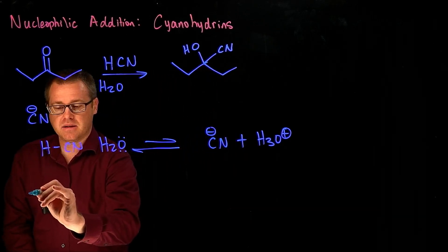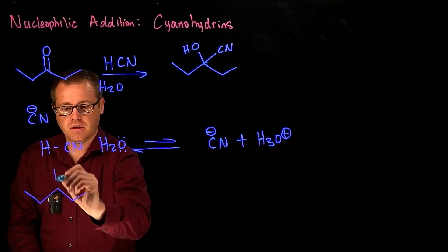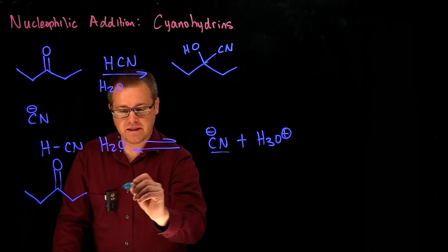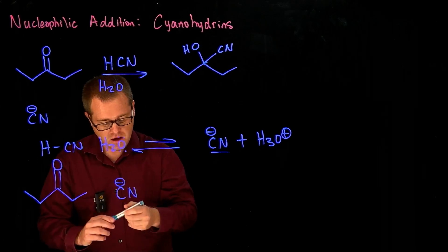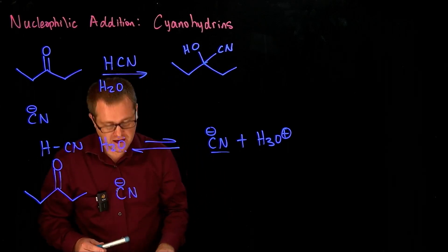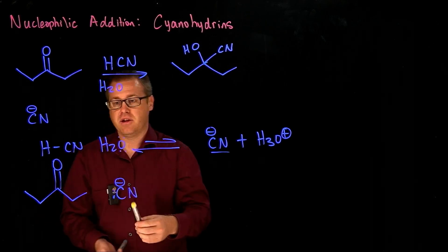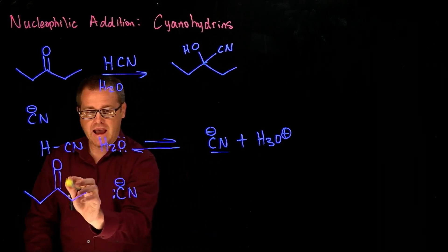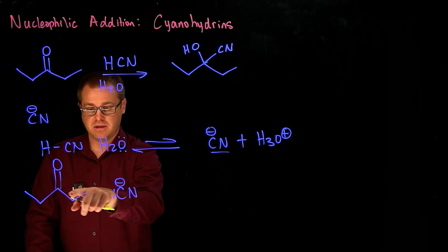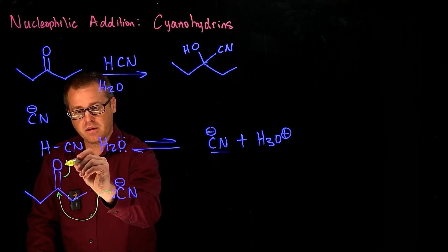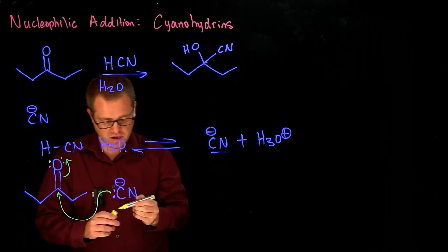And the mechanism is like this. So if we have this species in solution here, we can take that negative charge there. Let's draw in the lone pairs there. And you can see that we have electron-rich, electron-poor carbon. And that can come in like that, making sure those two lone pairs are shown.